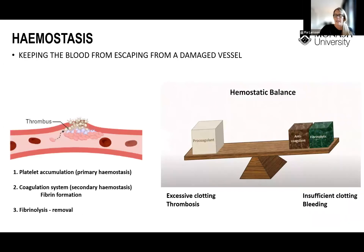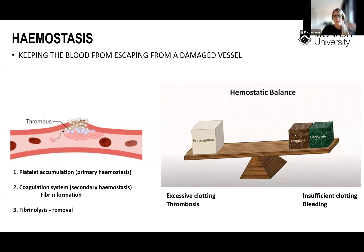I'll go through hemostasis very briefly. Hemostasis is the system we have in the body to keep blood from escaping from a damaged blood vessel. Simplified, this system is often described as three different subsystems: first, platelet accumulation if we have tissue or vessel damage — primary hemostasis; then activation of the coagulation system and fibrin formation — secondary hemostasis; and when the blood clot needs to be removed, the fibrinolytic system kicks in. This is of course very simplified and has a clear temporal sequence, which is actually not fully correct.